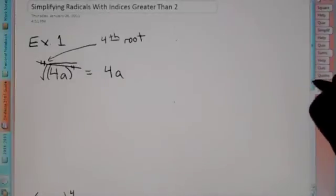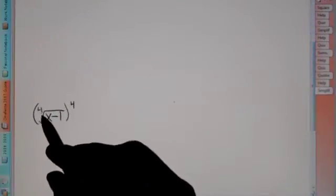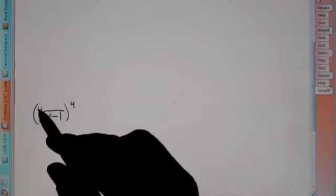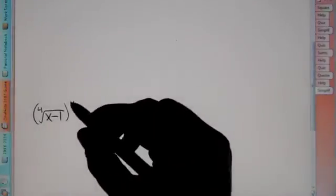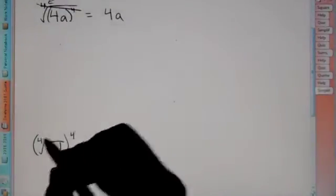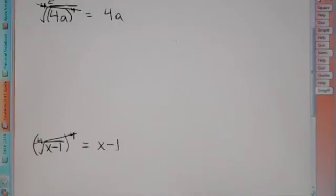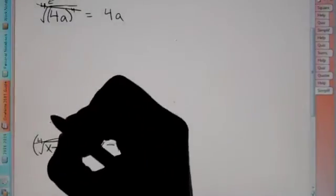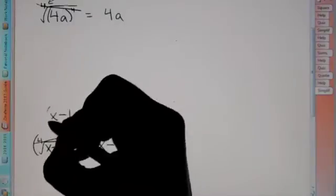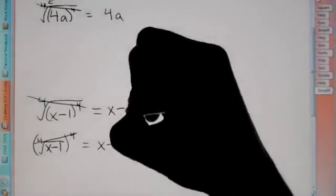You might have another problem set up differently, but it's the same type. Here we have, on the inside of parentheses, a 4th root, but on the outside a power of 4. These are just two different ways of writing the same thing. The 4th root and the power of 4 cancel out to equal x minus 1. This could have been written as x minus 1 to the 4th under the 4th root. So we're just left with x minus 1.